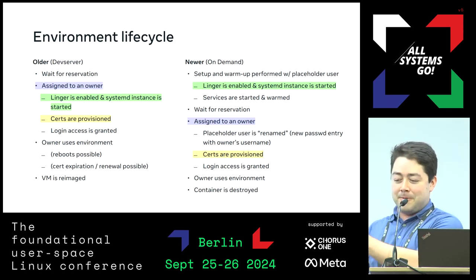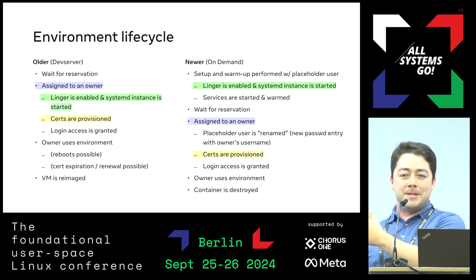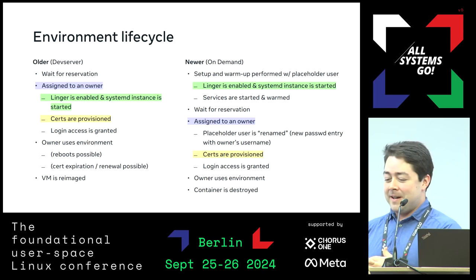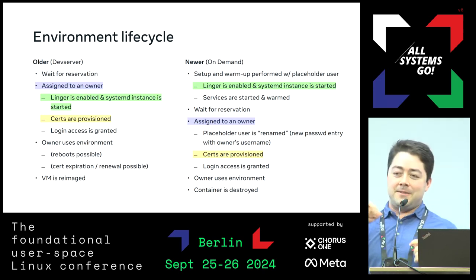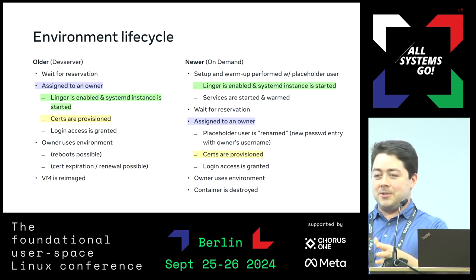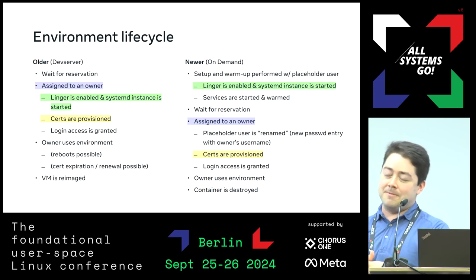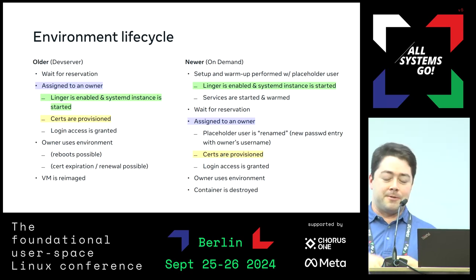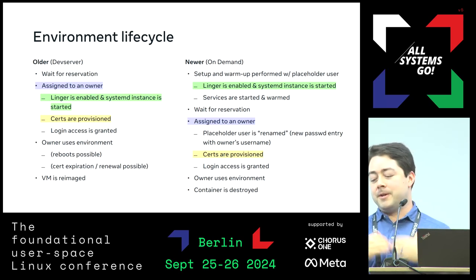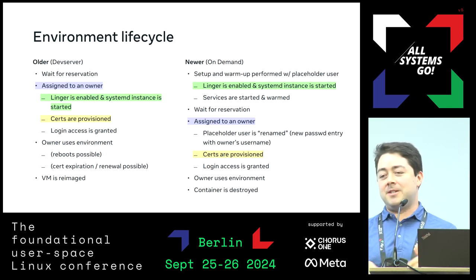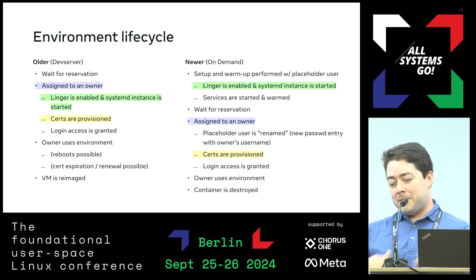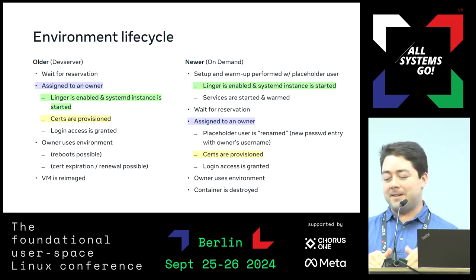These are the relevant steps for deploying a service to one of these machines — the parts of the lifecycle where we're starting up the systemd instance. In the first case it's very straightforward: we give the machine to the user and then we spin up the services. I've also highlighted certs being provisioned. After the machine is reserved by a user, one of the initial steps is we put some certs on the machine that identify them, and a lot of tooling at the company relies on those. This poses a problem when starting things up because a lot of things depend on the certs. We'll talk more about certs later.